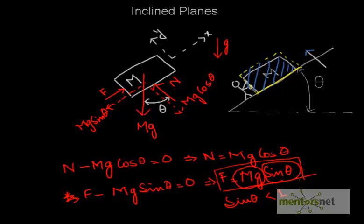Now you might wonder, sin theta is equal to 0 when theta is equal to 0. So if we simply make the ramp horizontal, the person won't have to apply any force. That is true, but in that case the person wouldn't be pushing the block up either. So there is always a compromise between the angle of the ramp and the amount of force that the person has to apply.